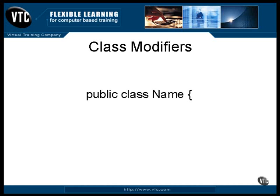When you declare a class as public, it must be a top-level class — that is, the definition cannot be nested inside another class. If you don't specify the access of a top-level class definition, the default is for the class to only be accessible to other classes that are inside the same package. A package is a collection of class and interface definitions.